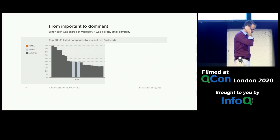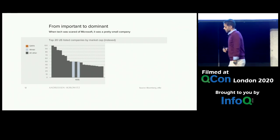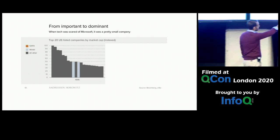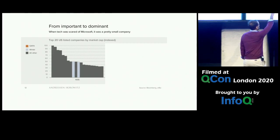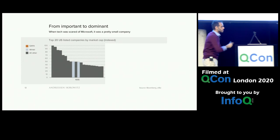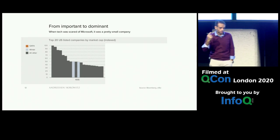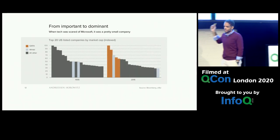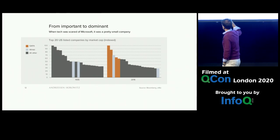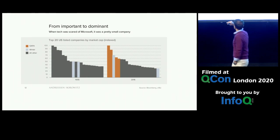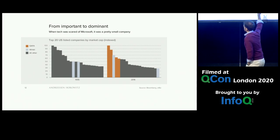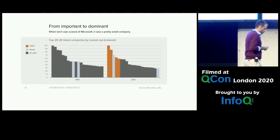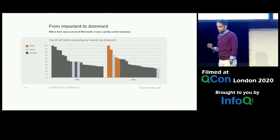In venture capital, this relates to the saying that software is eating the world. A figure of the largest 20 companies in the US in 1995 shows only two technology companies: Microsoft and Intel. Twenty years later, the leading five are technology companies — GAFA: Google, Apple, Facebook, Amazon — and then Intel. Every other company is also now developing software. Machine learning is the latest suite of methods that enable software to eat the world and every industry.